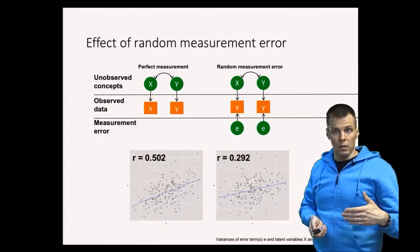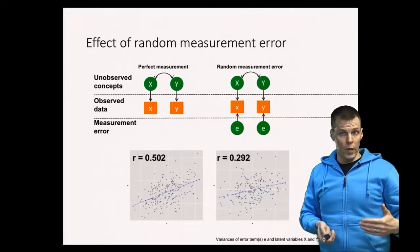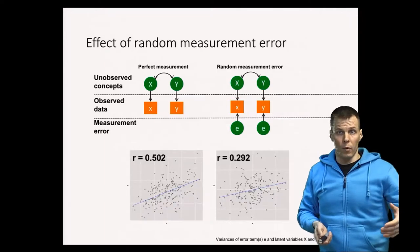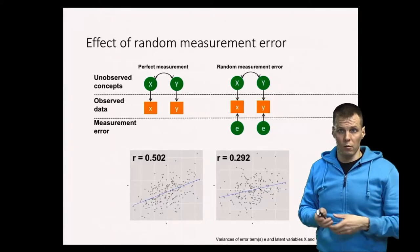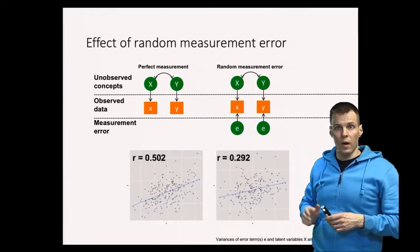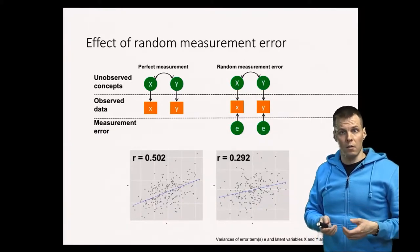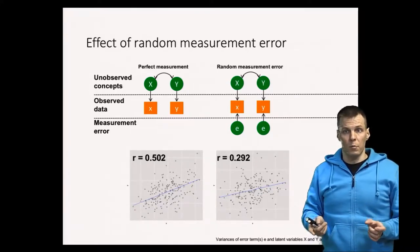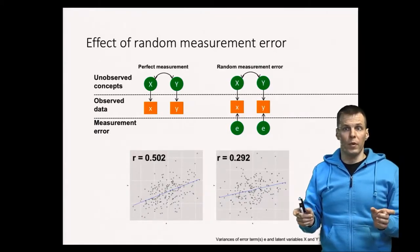We can see now that the observed correlation is a bit less than 0.3, which means that it's underestimated by about 40%. So the real value that we would like to get from the population correlation between latent X and latent Y is 0.5, but we observe a correlation of 0.29. So this is called attenuation. When you have random noise in your data, then all statistical relationships observed from that data, or bivariate relationships, will be smaller.